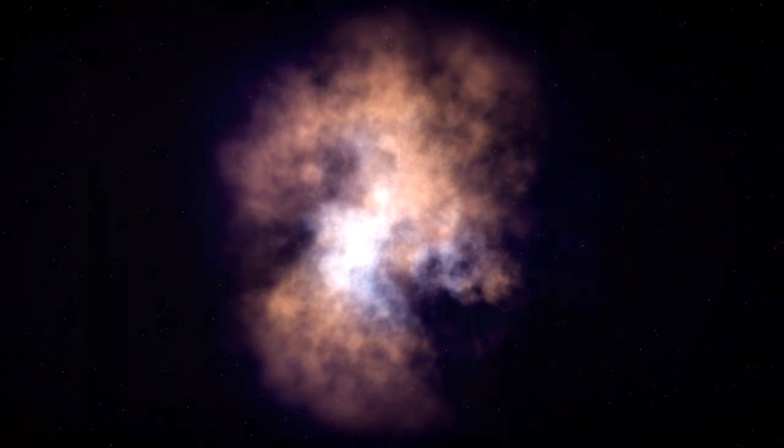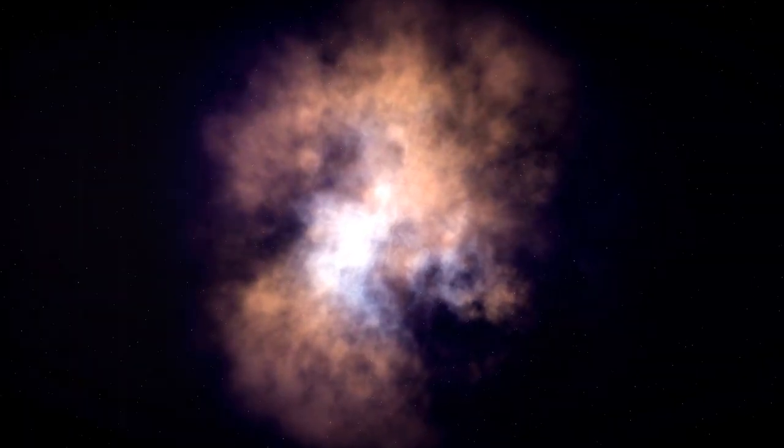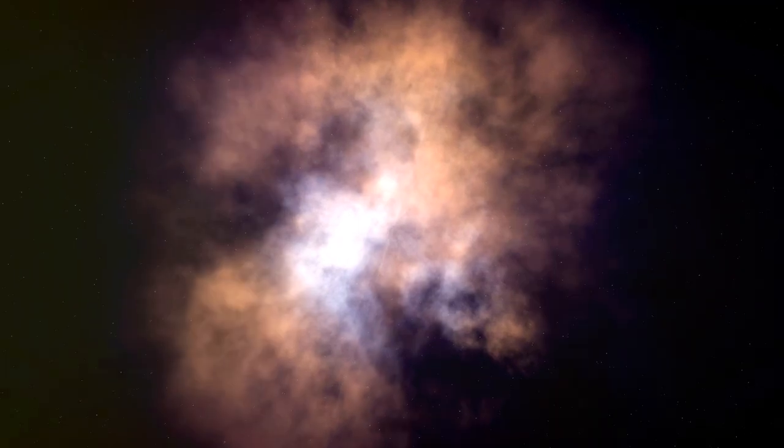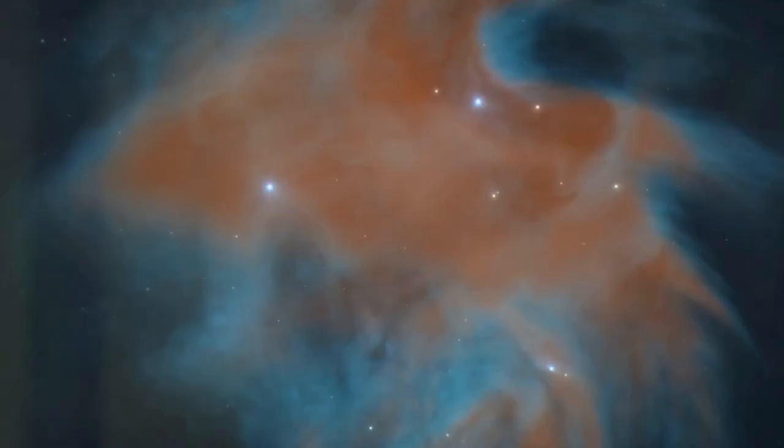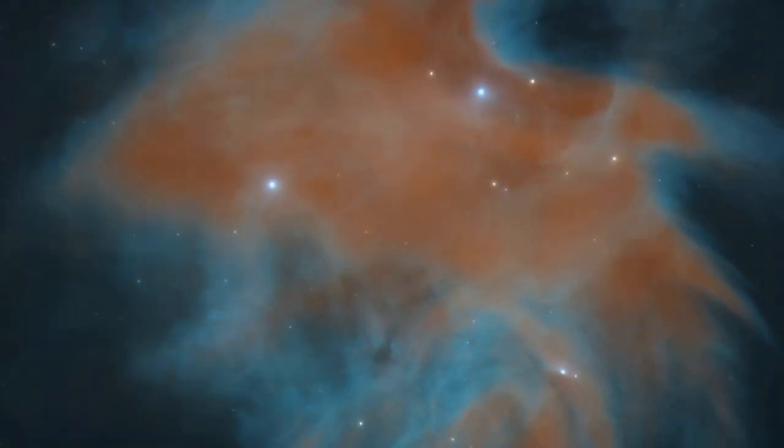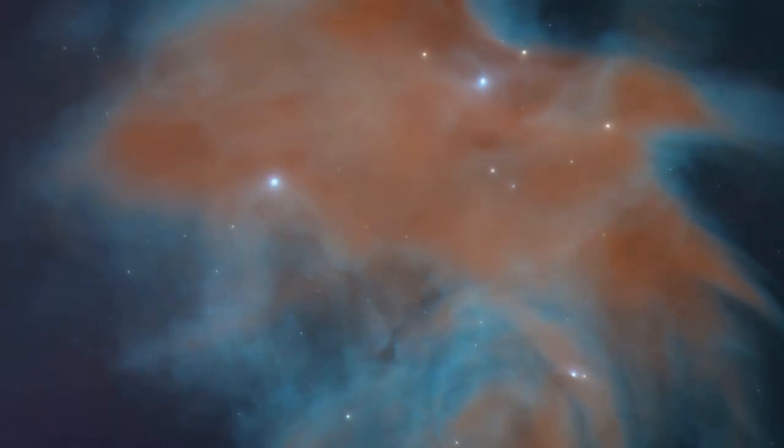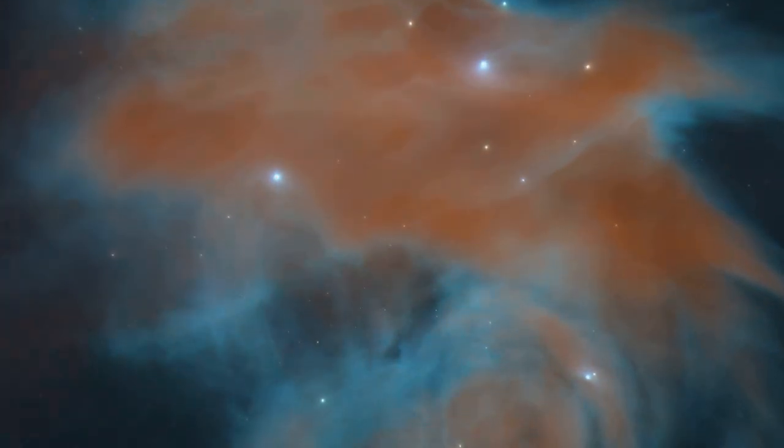Then there are reflection nebulae. They are more discreet, less flamboyant. They do not generate their own light, but instead reflect the light of nearby stars. This scattered starlight illuminates the dust within the nebula, creating a soft, ethereal glow, often in shades of blue.